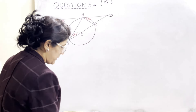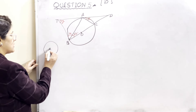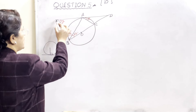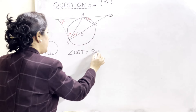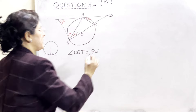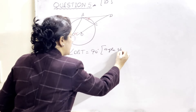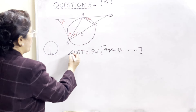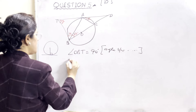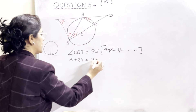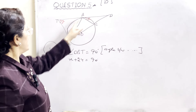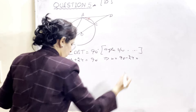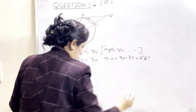Step by step: Pehla — tangent aur radius ke beech angle 90 degree hota hai. Angle OBT = 90 degree (angle between tangent and radii should be perpendicular). Angle OBT = angle OBA + angle ABT = X + 24 = 90. Toh X = 90 - 24 = 66 degrees.